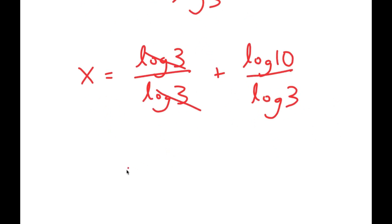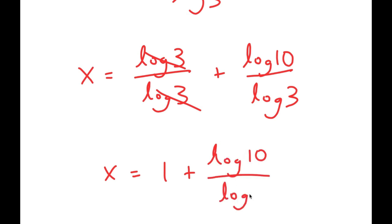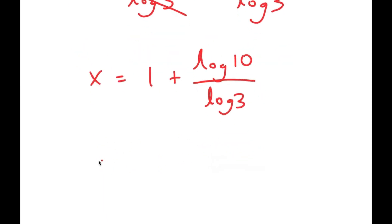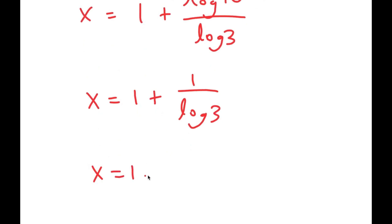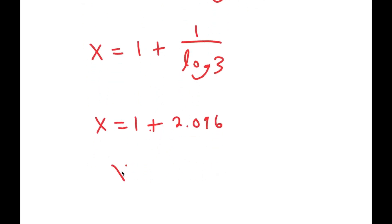So now this is equal to log 3 over log 3 plus log 10 over log 3. Log 3 over log 3 cancels out, so I get x equals 1 plus log 10 over log 3. And log 10 is 1, so I get x is equal to 1 plus 1 over log 3. Now, 1 over log 3 is equal to 2.096, so x is equal to 3.096.